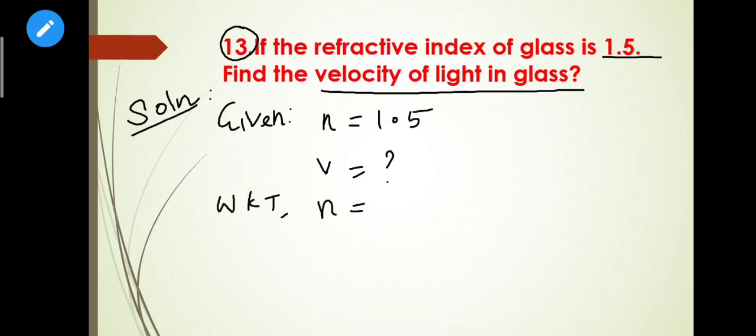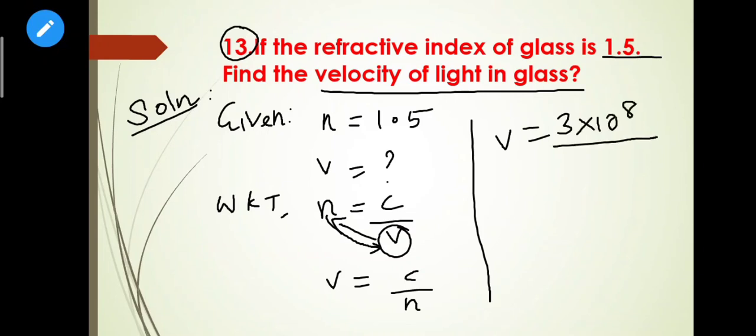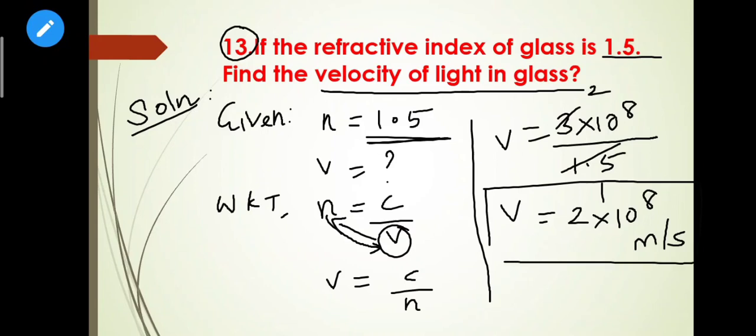So v = c/n. Speed of light c = 3×10⁸ m/s, n = 1.5. Simplifying: v = (3×10⁸)/1.5 = 2×10⁸ meter per second. Very important - don't forget the unit, otherwise they won't give full marks. This is the answer for the 13th question.